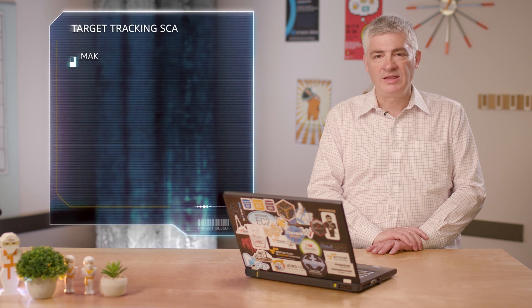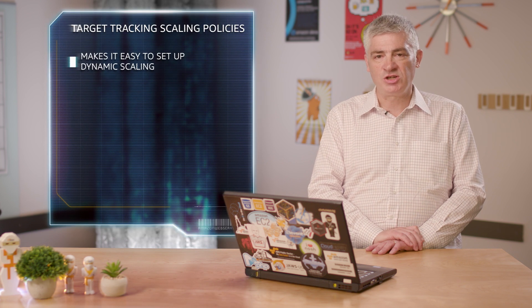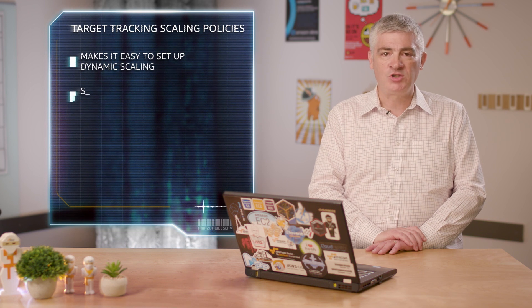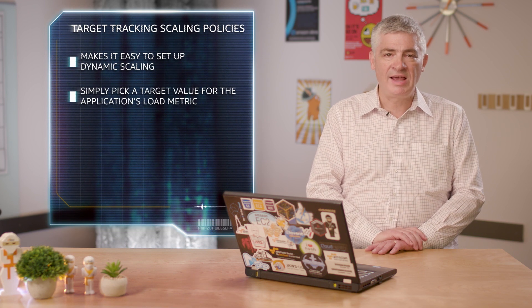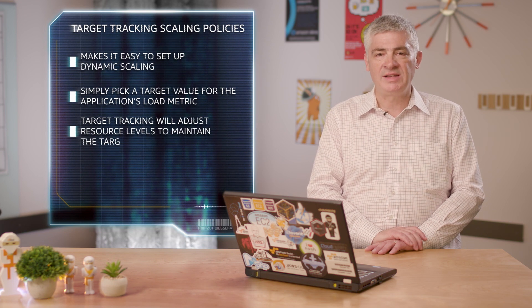Today we're introducing a new auto scaling policy called target tracking that makes it easy to set up dynamic scaling for your application in just a few clicks. With target tracking you simply pick a target value for your application's load metric and target tracking adjusts resource levels as needed to maintain that target. It acts like a home thermostat, automatically adjusting the environment to maintain your desired temperature.